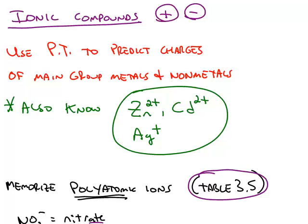Another class of compounds besides molecular compounds are ionic compounds. Ionic compounds are composed of ions, cations and anions. We already know that we can use the periodic table to predict the charges of main group metals and main group non-metals. For example,